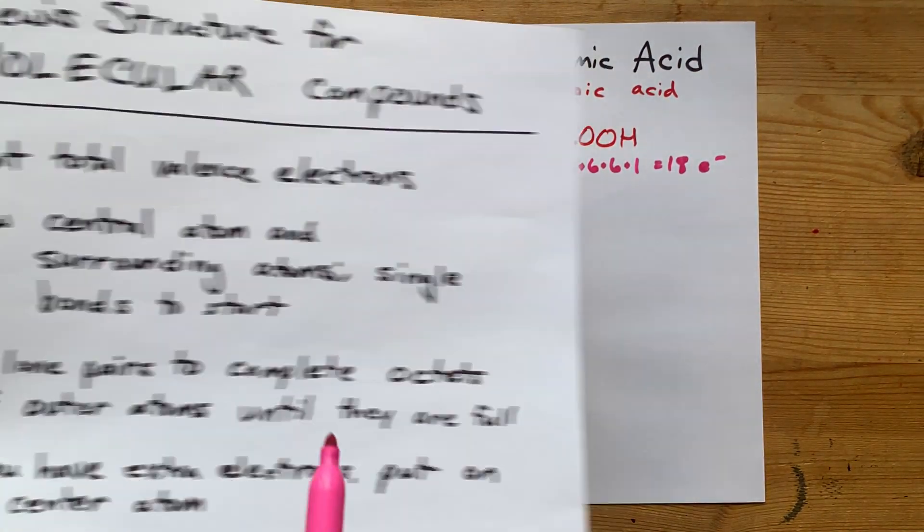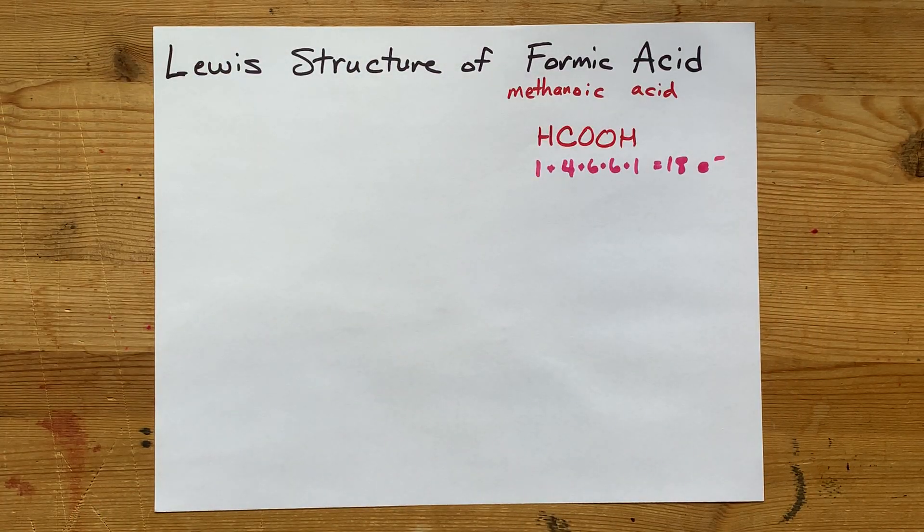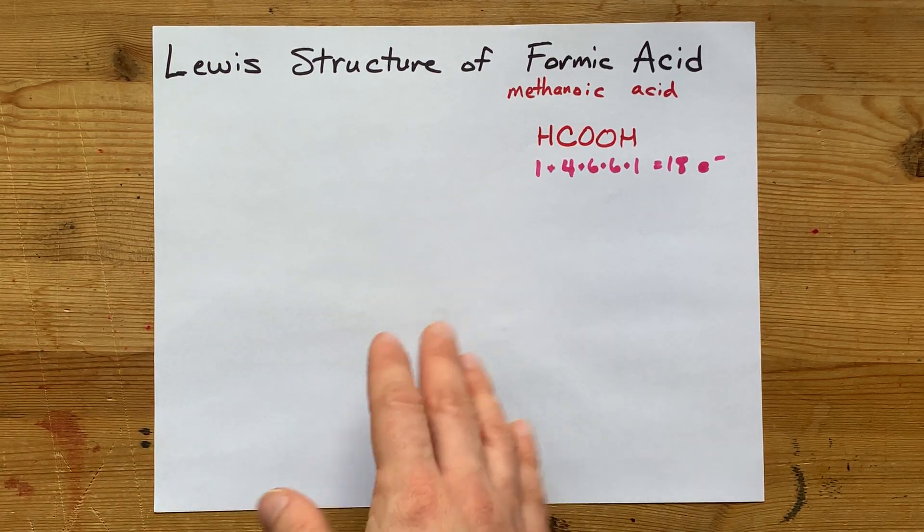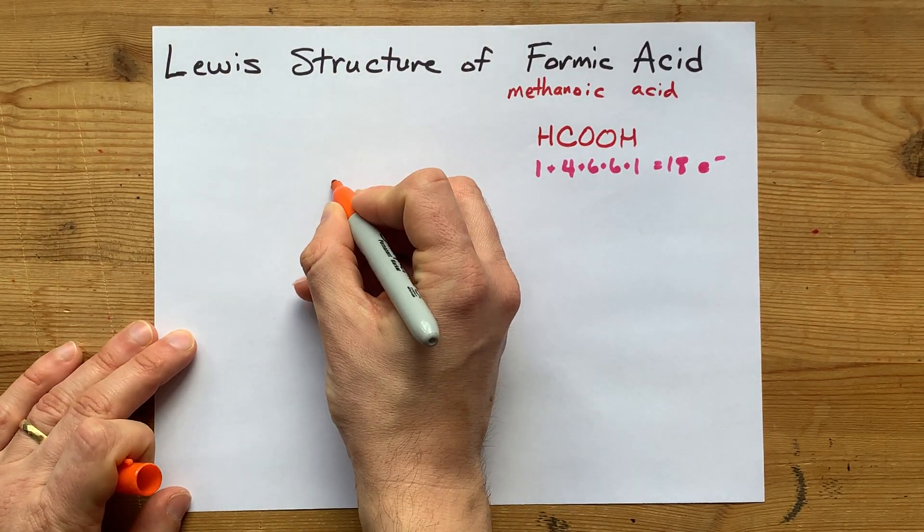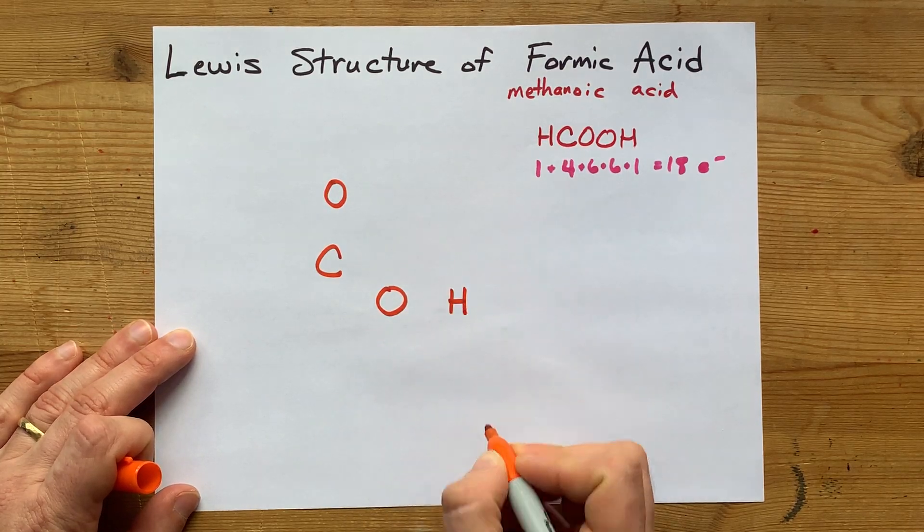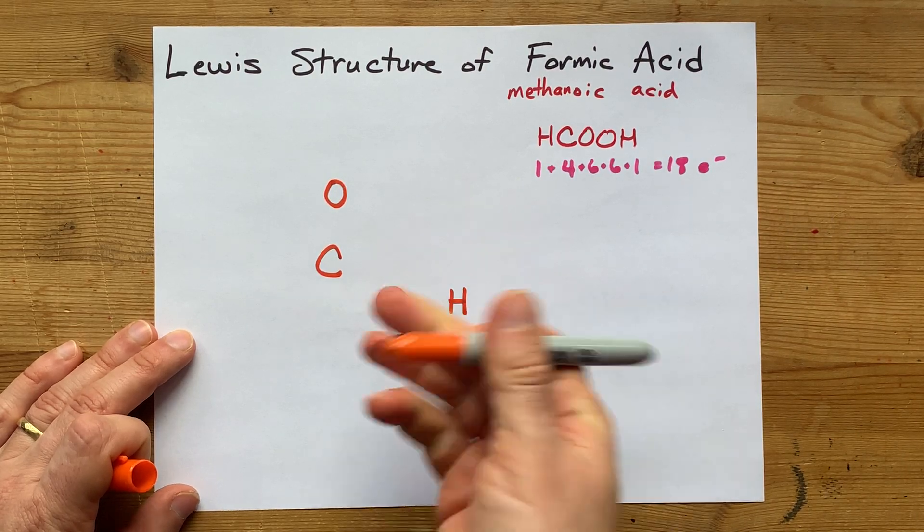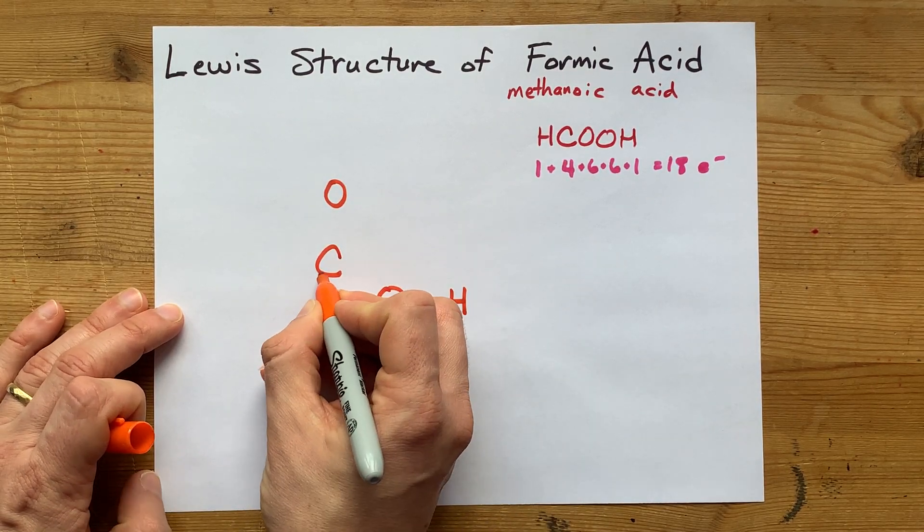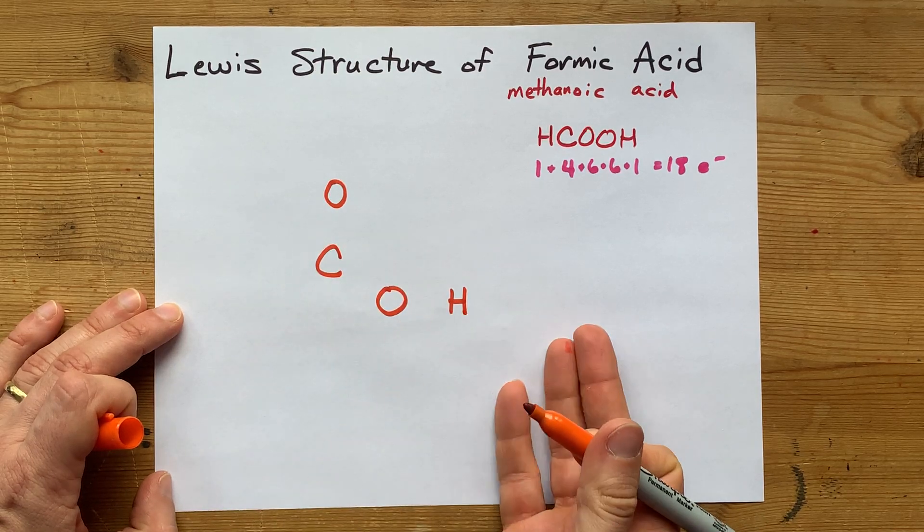Then I'm going to draw the central atom and the surrounding atoms, all single bonded to start with. Now, if you're not familiar with the structure of an acid, this is going to be kind of difficult to just figure out on your own. An acid has a carbon that's bonded to two separate oxygens, and one of those oxygens has an extra H on it. That's the H that makes this an acid. It can come off due to resonance, etc.